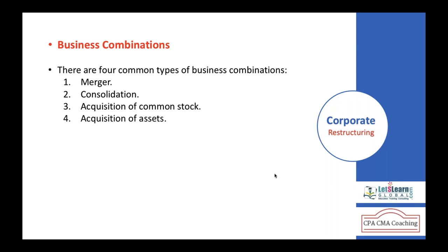In this session we discuss the types of business combinations. The four most common types include: a merger, consolidation, acquisition of common stock of a company, and acquisition of assets. Let's discuss each one in detail — what a merger is, what a consolidation is, and what the acquisition of common stock and assets are.